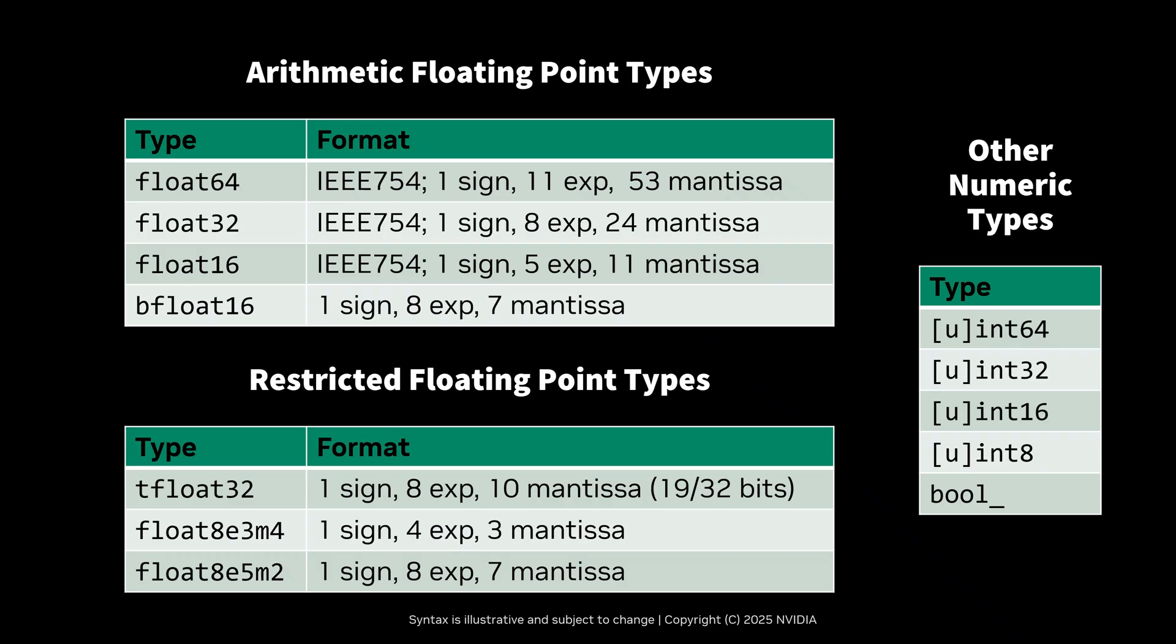At launch, Qtile will support a wide range of numeric dtypes. Arithmetic floating-point types and all non-floating-point numeric types can be used with all arithmetic and mathematical operations, such as addition, subtraction, trigonometric functions, and transcendental functions. Restricted floating-point types can only be used with certain operations, such as matrix multiplications.